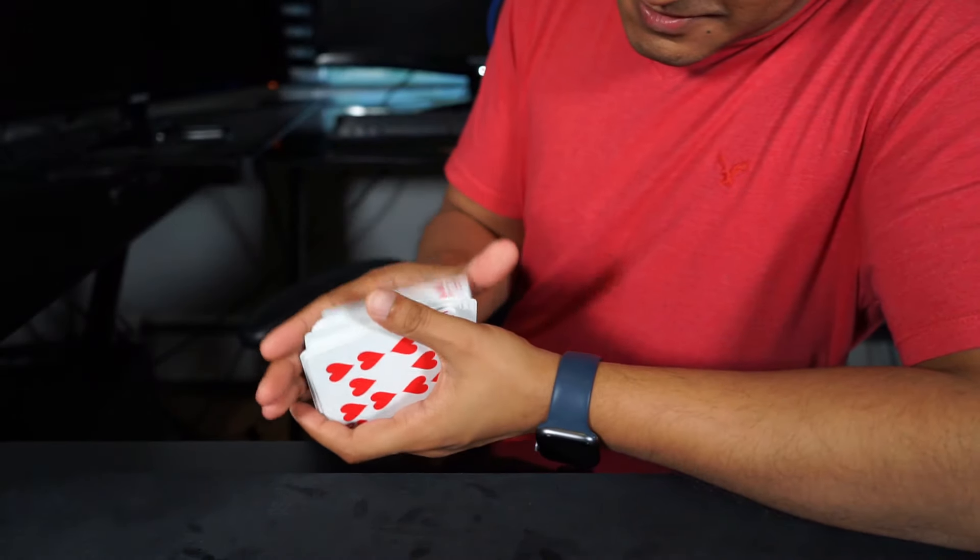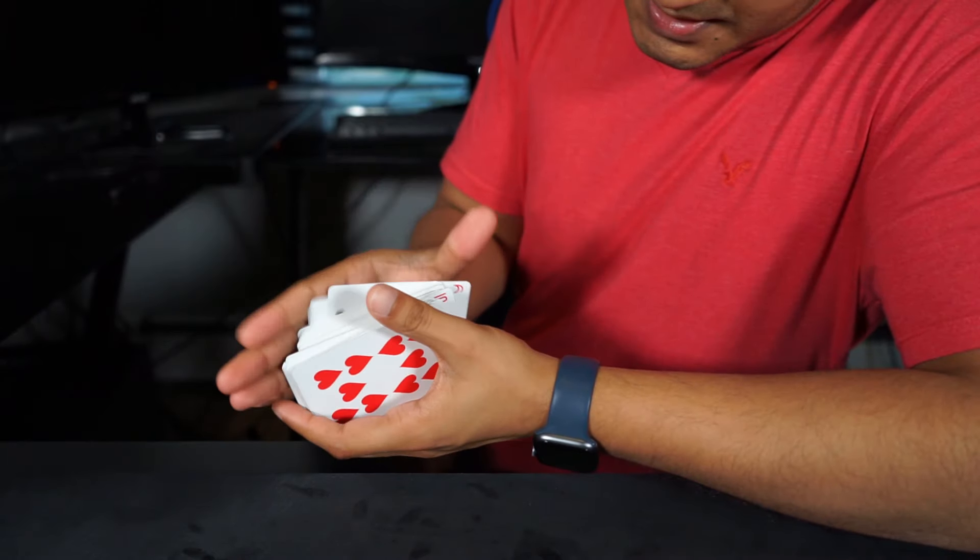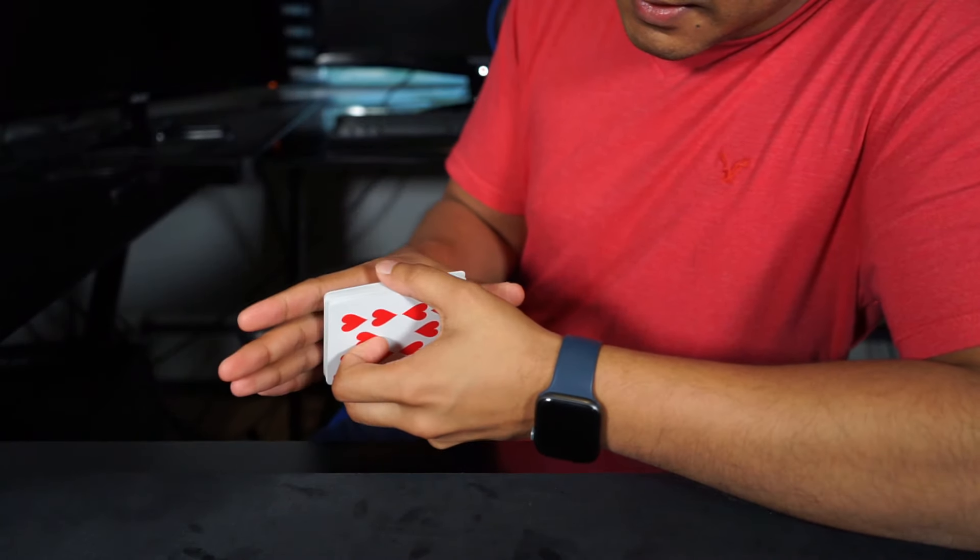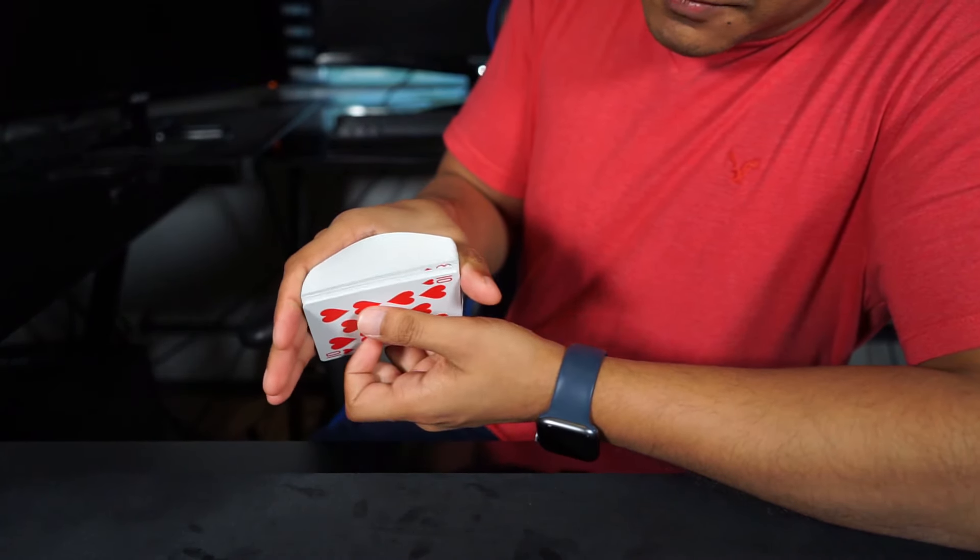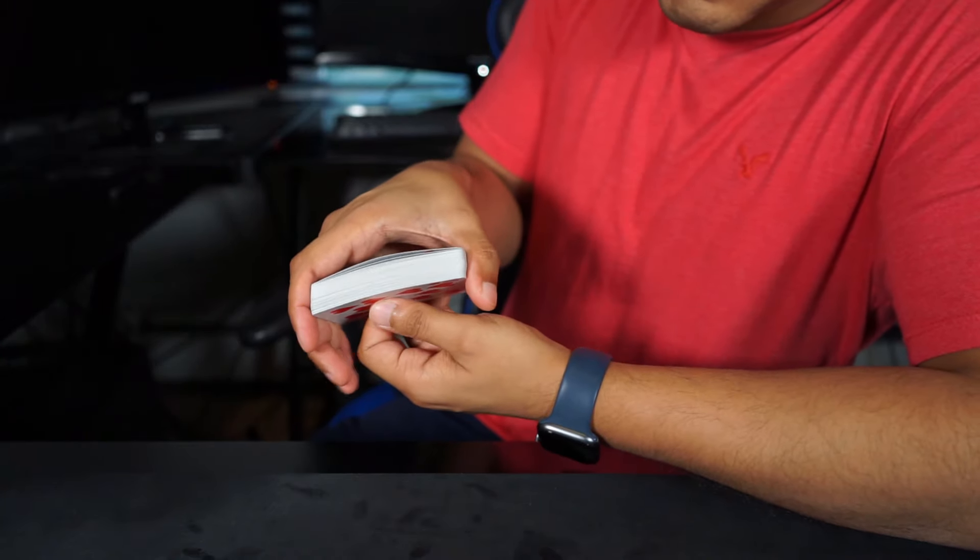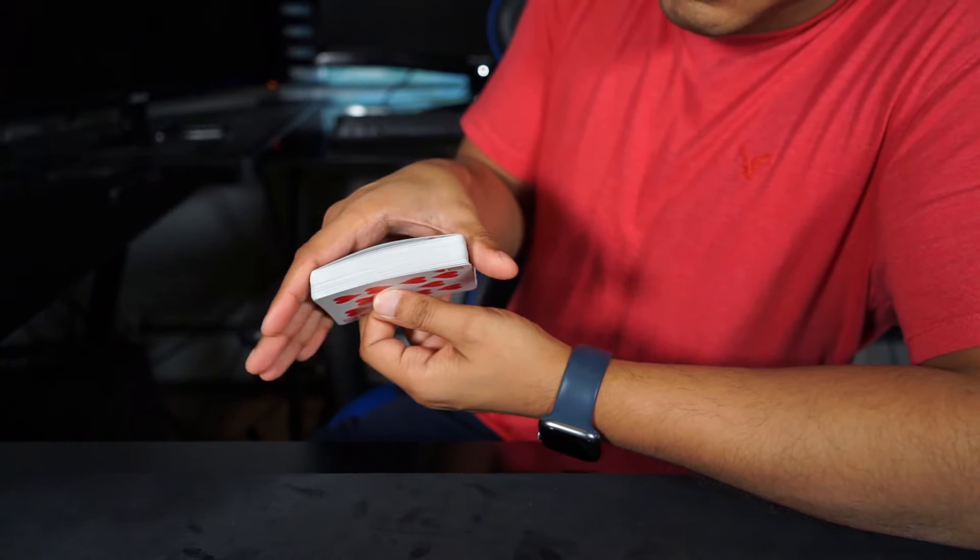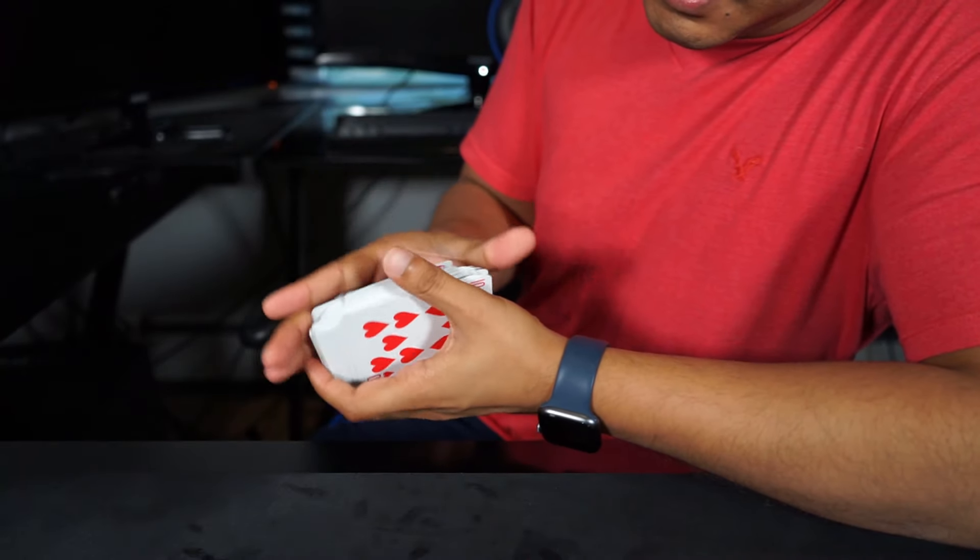So again, once you're in this grip, you're just going to let the cards fall naturally. So just let them fall from the front to the back. So you're here, and all you're doing is releasing from the front to the back. So it's like this, you're releasing like this. That's all you're doing. So you're slowly releasing the cards.